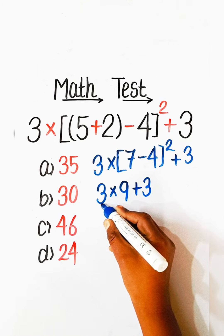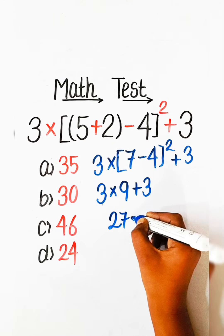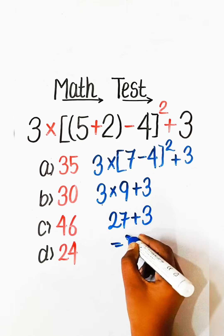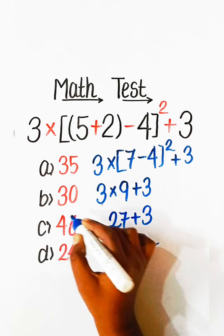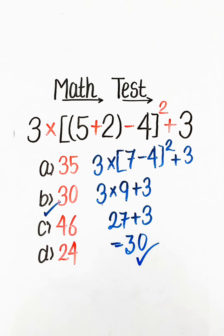3 nines are 27, plus 3 is equal to 30. So Option B: 30 will be the correct answer. If you like my video, please like, share, and subscribe to the channel.